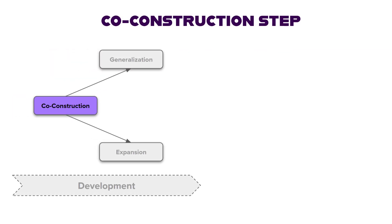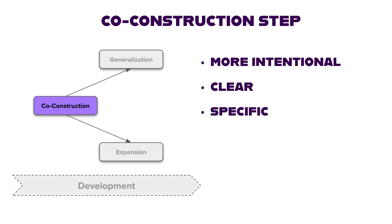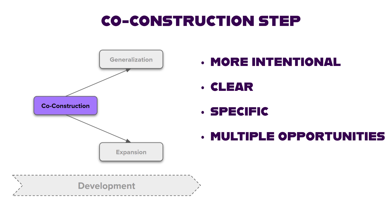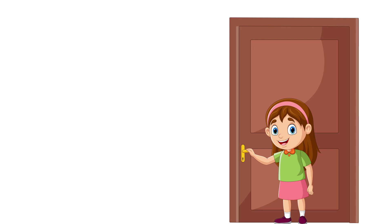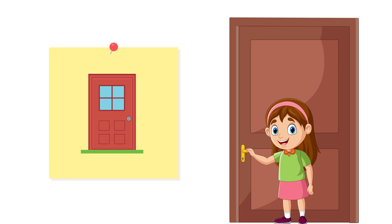Now that we have identified the message we want to work with, we will make their confirmed message more intentional, clear, and specific. We do this by providing multiple opportunities for the child to imitate a clearer, specific message with a variety of modalities. Kaylee, who is non-speaking, liked to play with the door by opening and closing it. By providing a picture of a door to represent this action, we taught Kaylee how to request to play with the door by pointing to the picture.